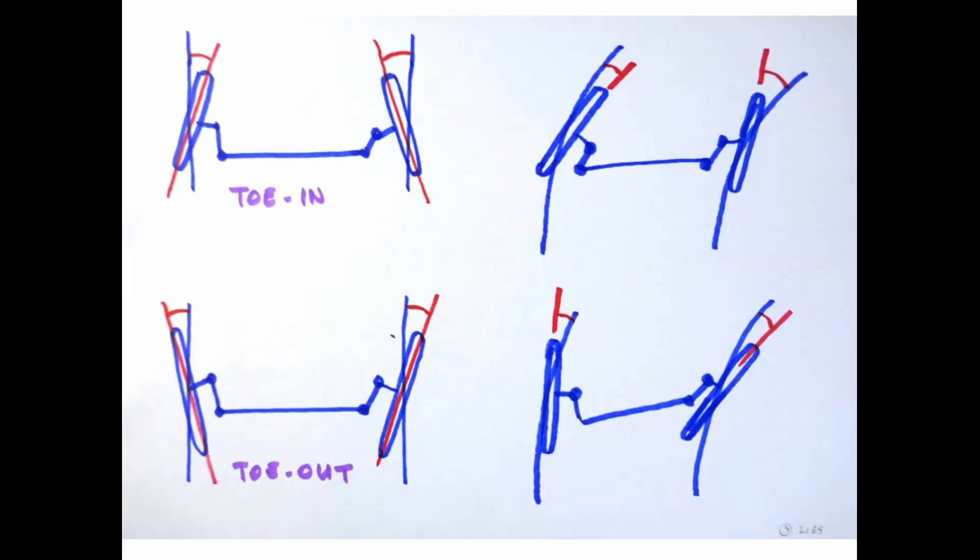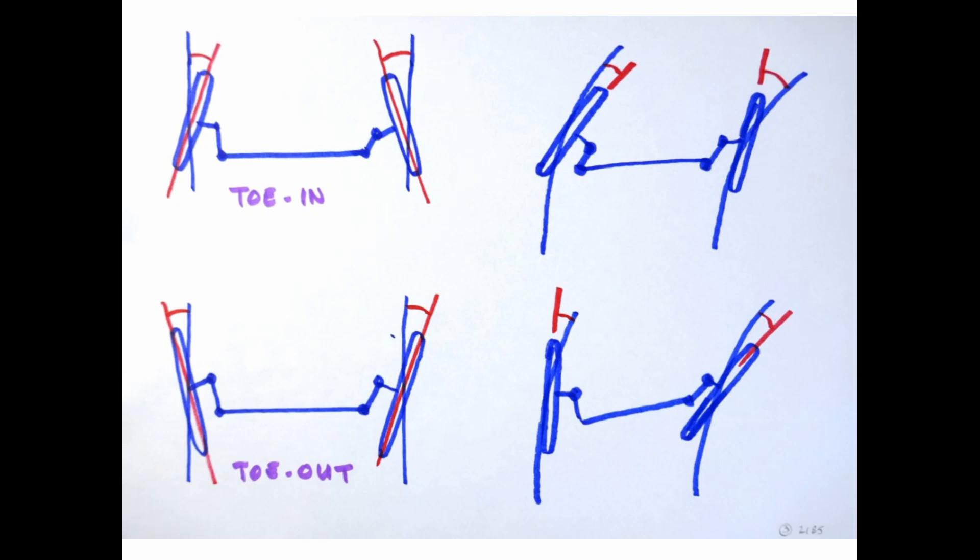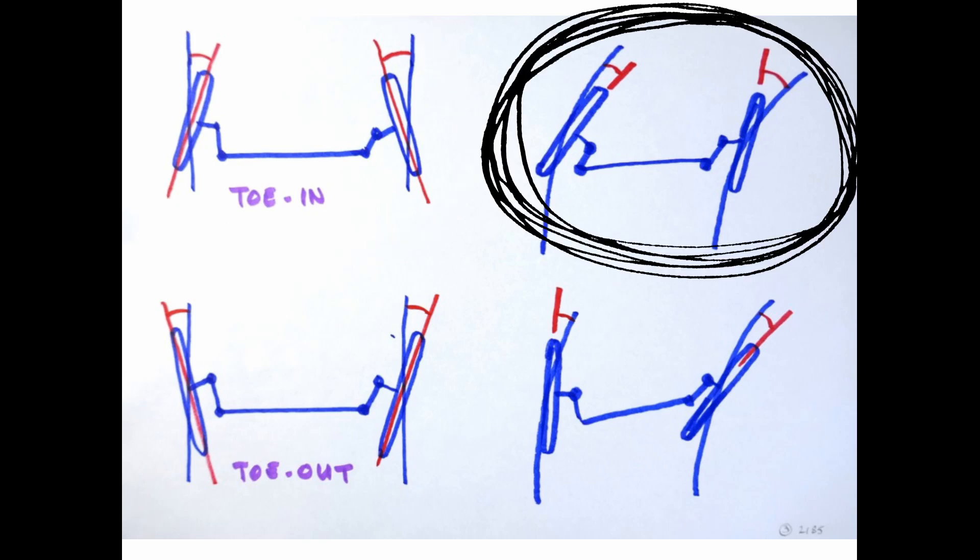Any resulting toe in or toe out imparted to the steered wheels will cause accelerated tire wear and extra rolling resistance. This diagram shows what's meant by toe in and toe out. So toe in is where the steered wheels point inwards and when the vehicle is travelling straight ahead this is as shown here and when the vehicle is turning the effect is as shown here. Toe out is the opposite so the steered wheels are angled outwards.